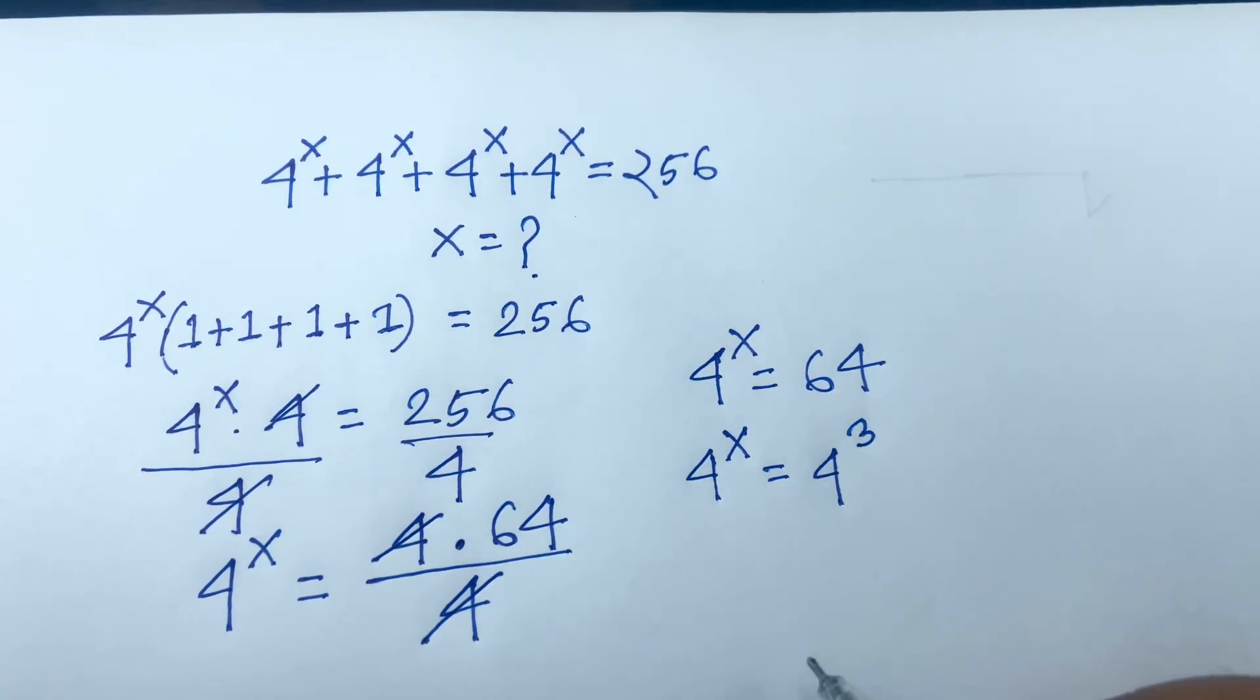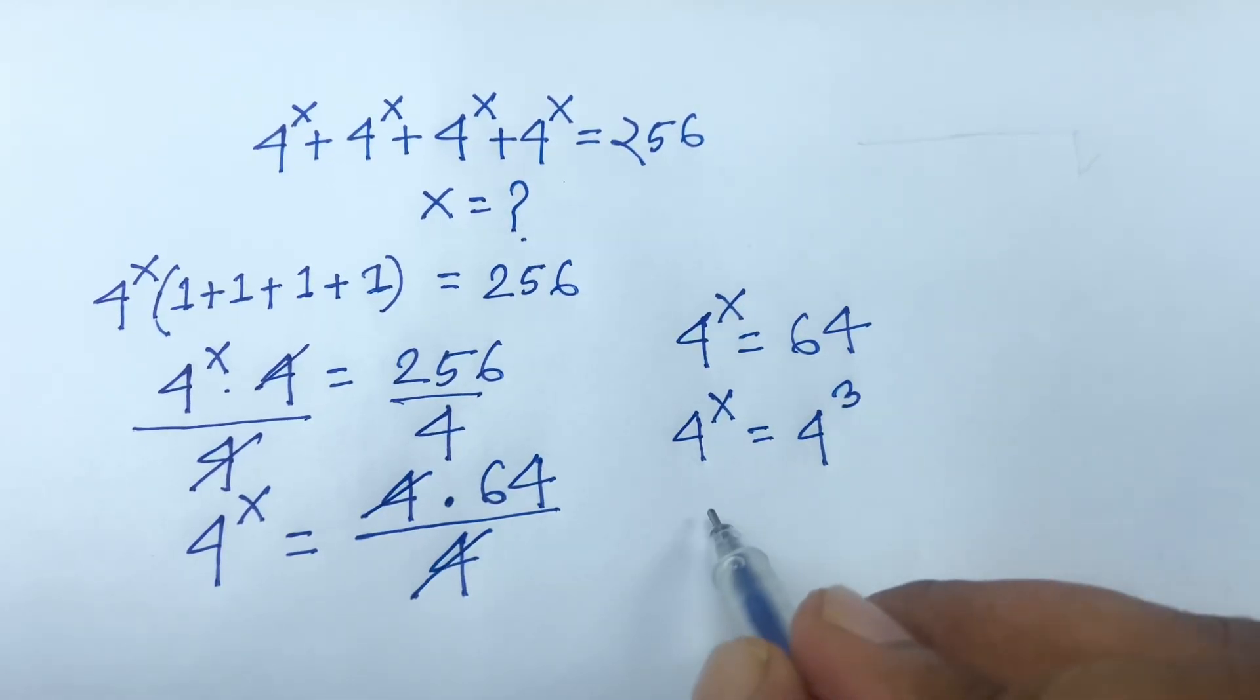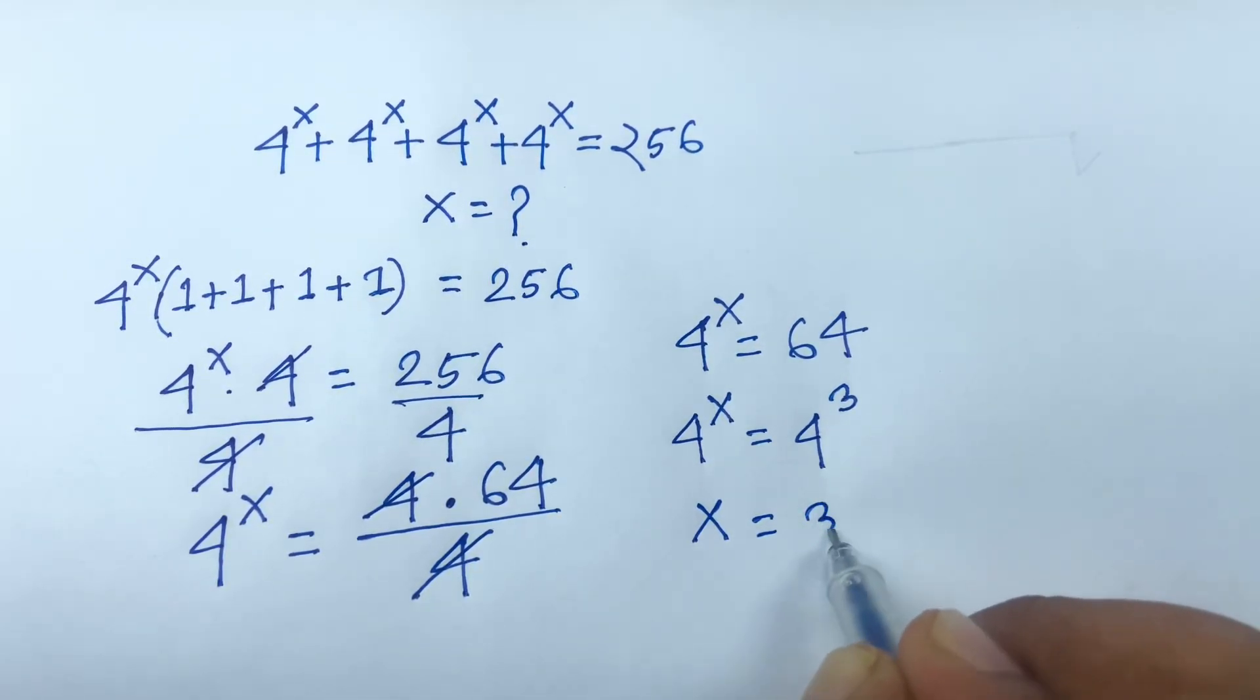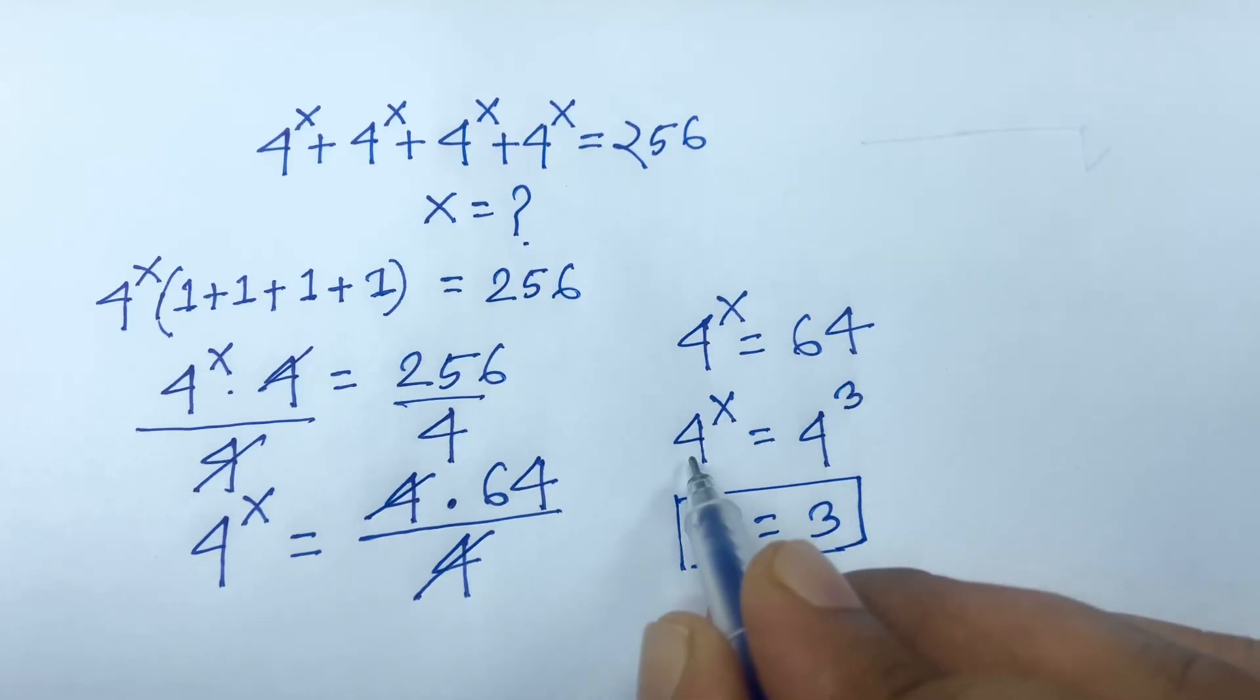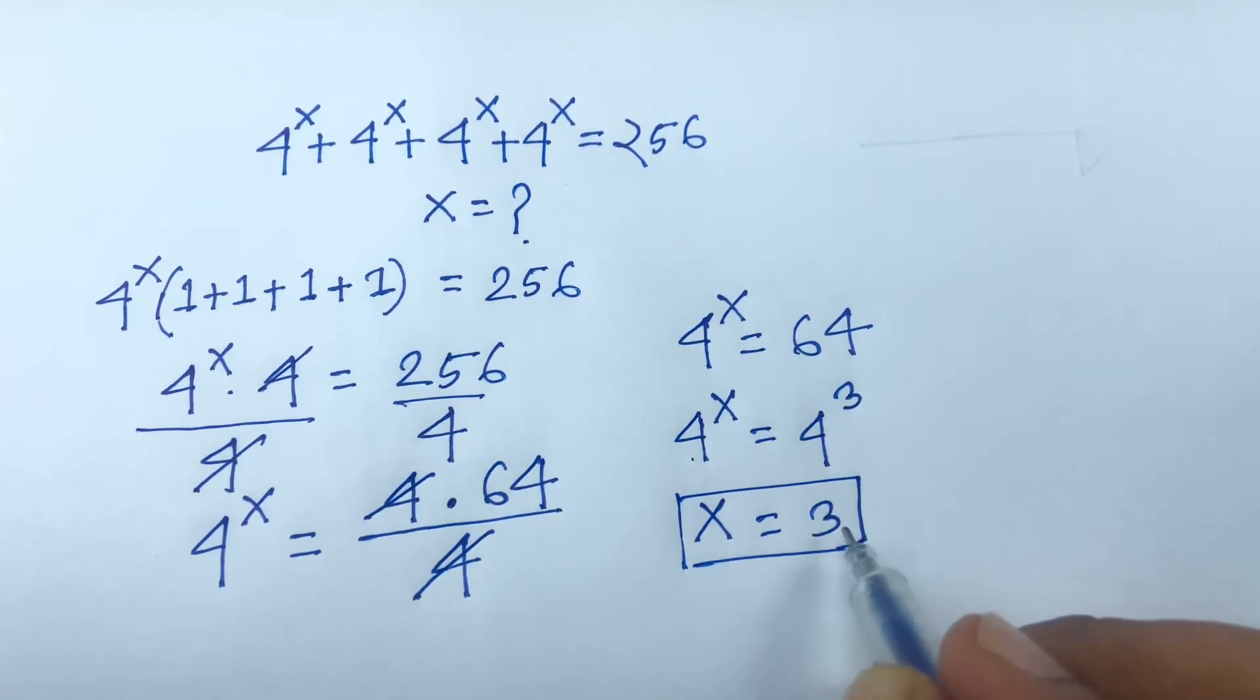The bases are the same. According to exponential rules, when the bases are equal, x equals 3. Since we have the same base 4 on both sides, x equals 3.